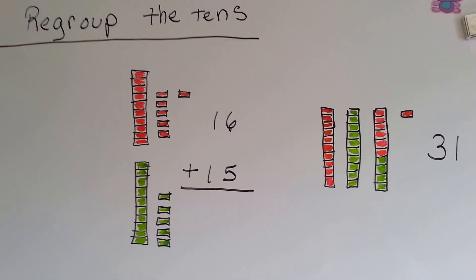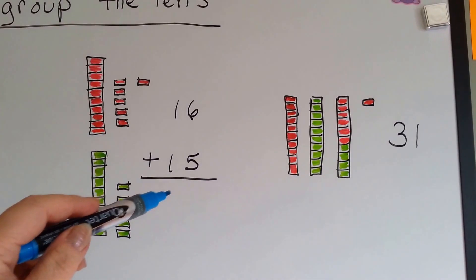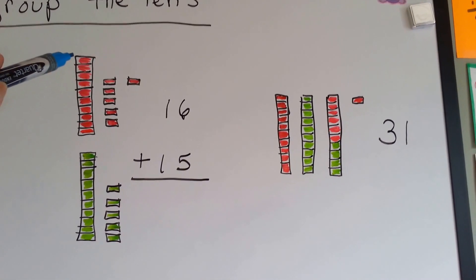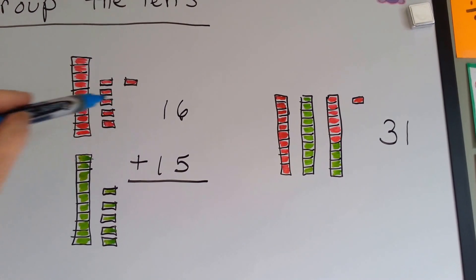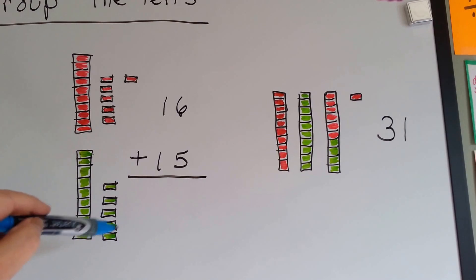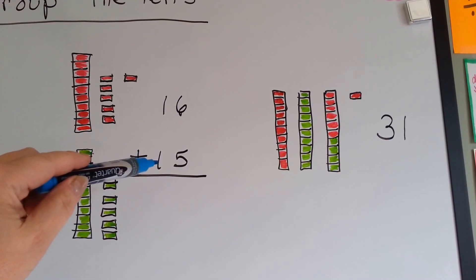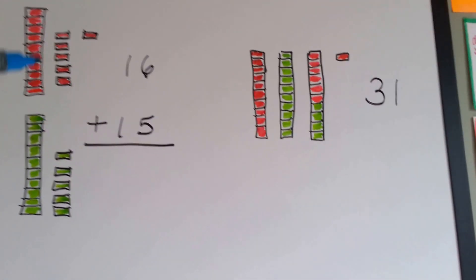If you remember regrouping the tens, if you wanted to add 16 plus 15, that would be a bar of 10 and 6 single ones for the 16, and a bar of 10 and 5 single ones for the 15. If you put them together, they're going to make 31, and here's how.